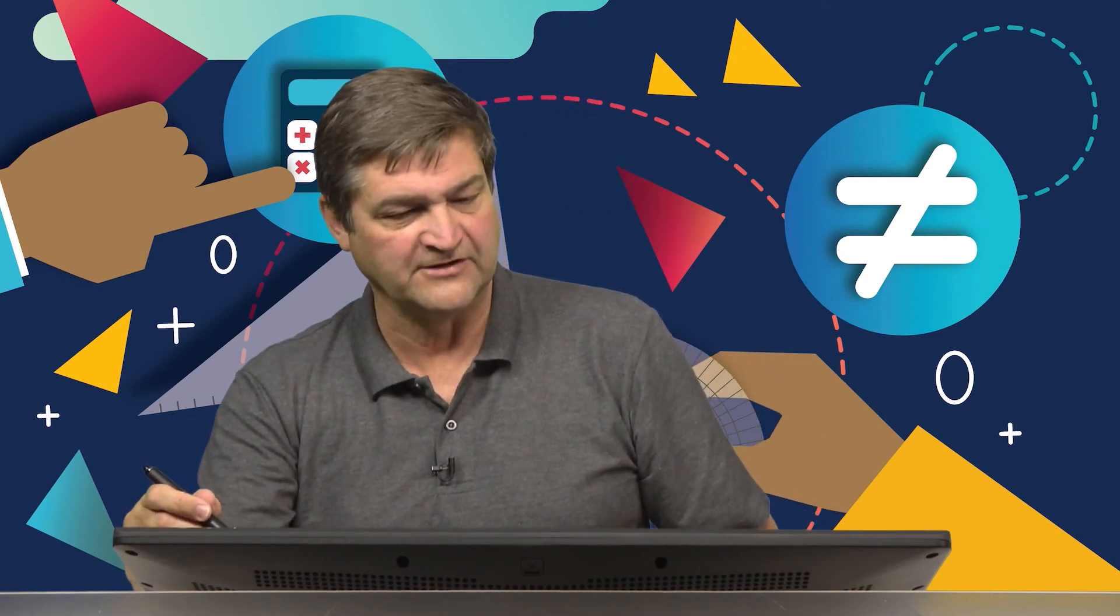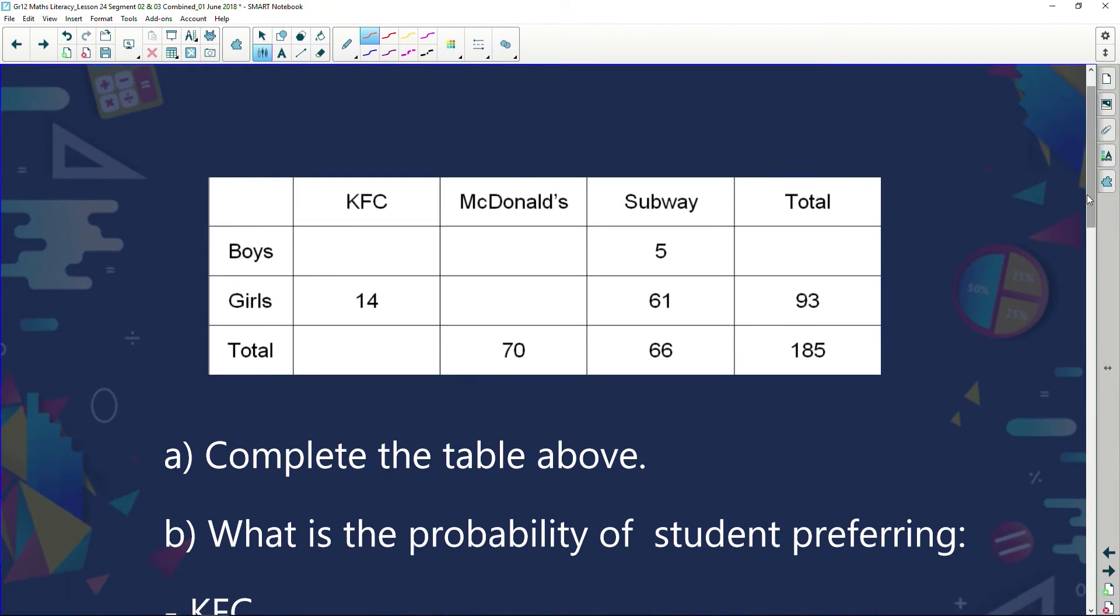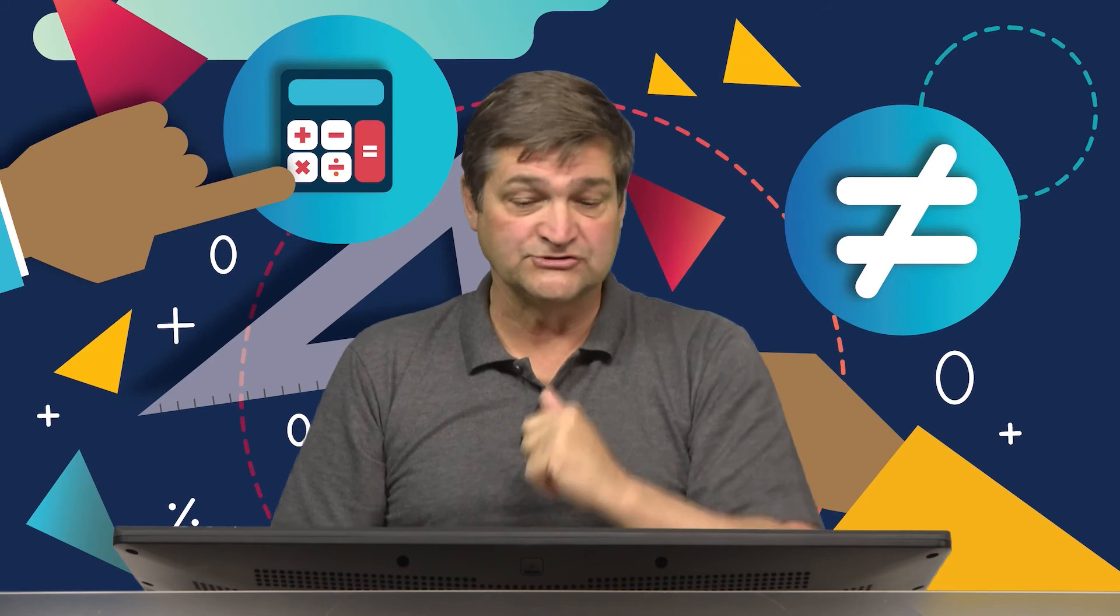Let's go back and let's look at another example. So here we go. We are asking boys and girls which takeaways do they enjoy. Do they like KFC, McDonald's, or Subway? And here's our contingency table. Fill in the missing bits. Again, we can only fill in the bits when there's only one bit of information missing in each row or each column.